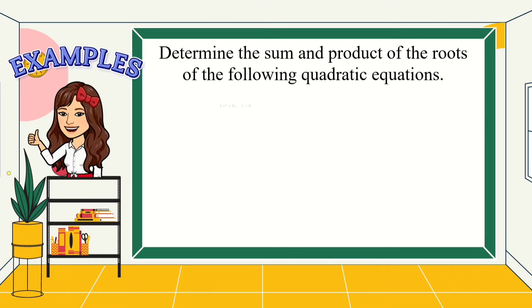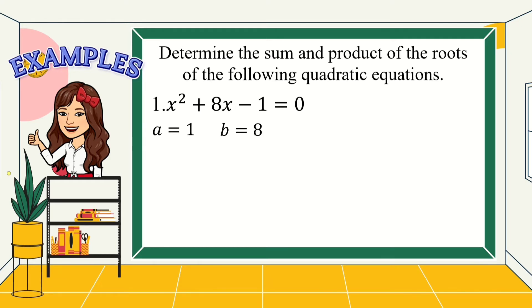For number 1, we have x squared plus 8x minus 1 equals 0. Always remember, before getting the values of a, b, and c, make sure that the quadratic equation is written in standard form. In this example, it is already in standard form, so we can now get the values: a is 1, b is 8, and c is negative 1.